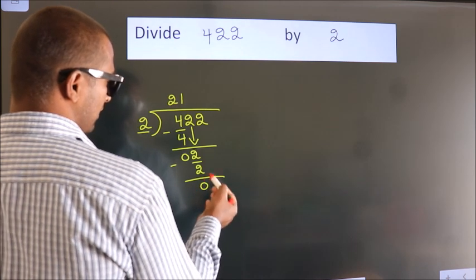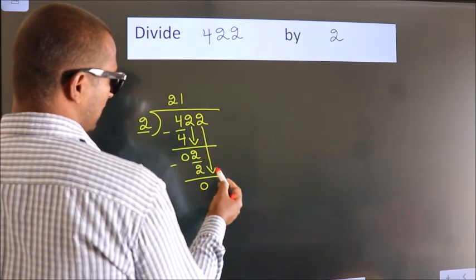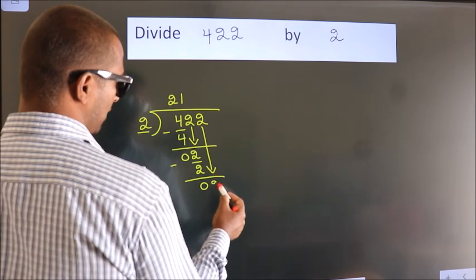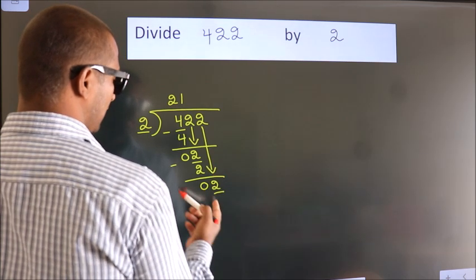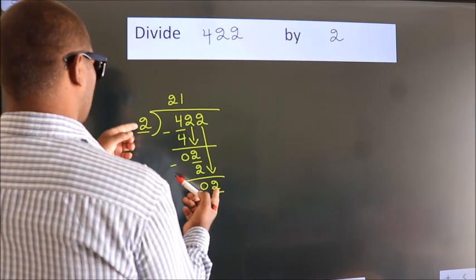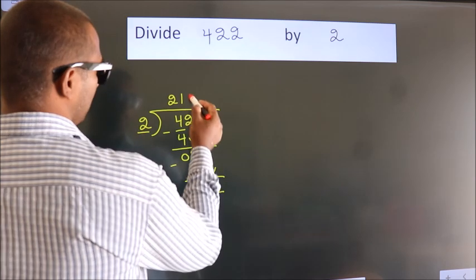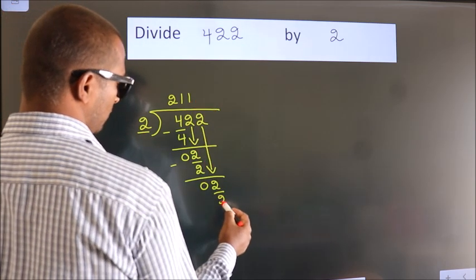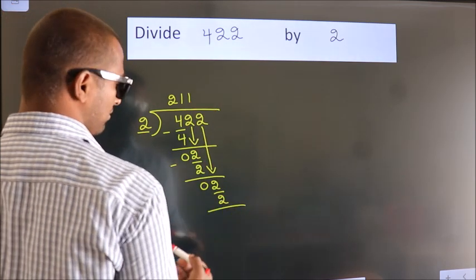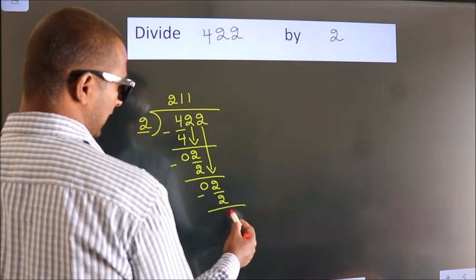After this, bring down the beside number. So 2 down. So 2. When do we get 2? In 2 table. 2 1s, 2. Now we subtract. We get 0.